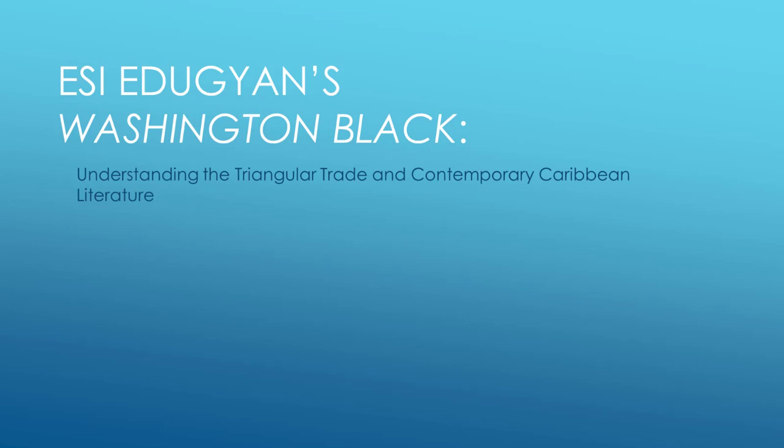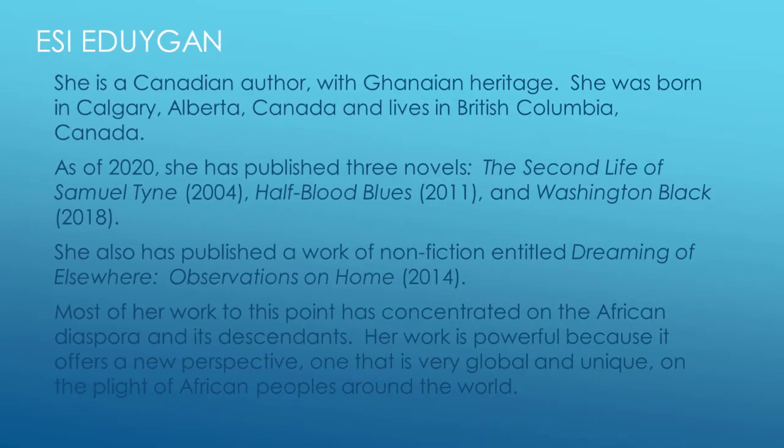In this presentation, I hope to show you how and why this book matters for Caribbean literature. I hope to give you an overview of the triangle trade and globalization. In the end, Washington Black exemplifies great world literature. S.A. O'Dugin, while a Canadian writer, writes Washington Black with an authenticity and a commitment to research that makes the novel belong among other great works of contemporary Caribbean literature.